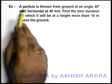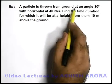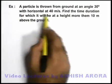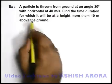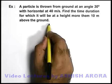In this example we are given that a particle is thrown from ground at an angle 30 degree with the horizontal at 40 meters per second. We are required to find the time duration for which it will be at a height more than 10 meter above the ground.